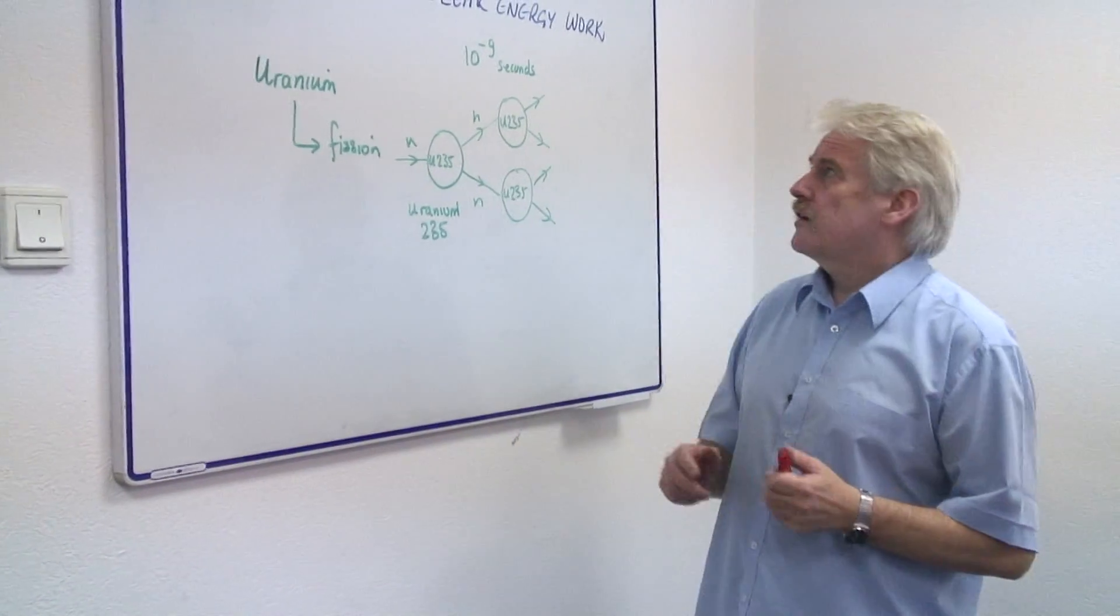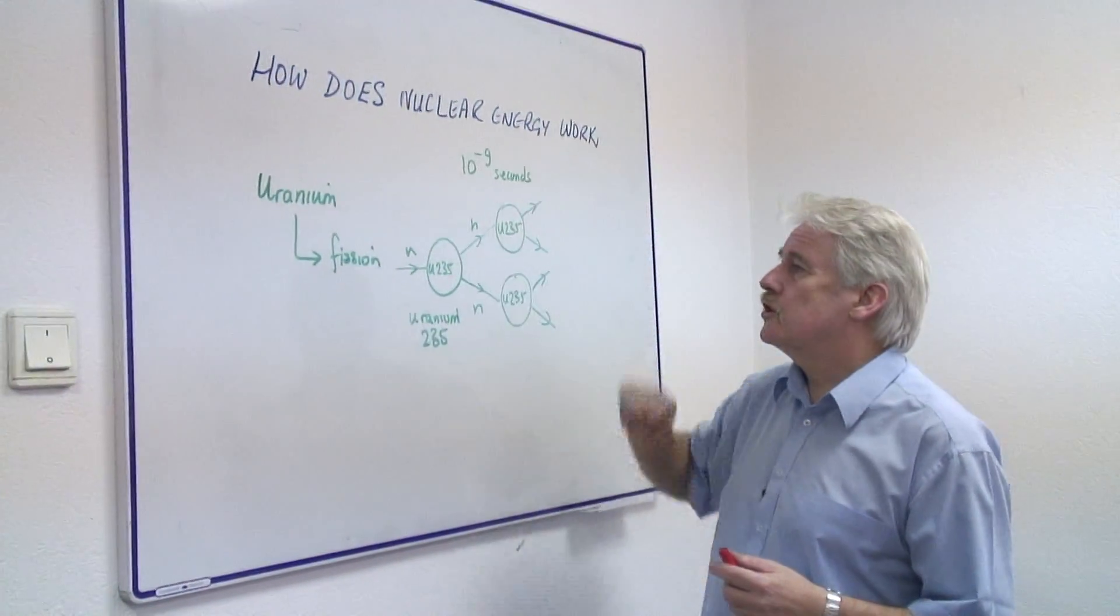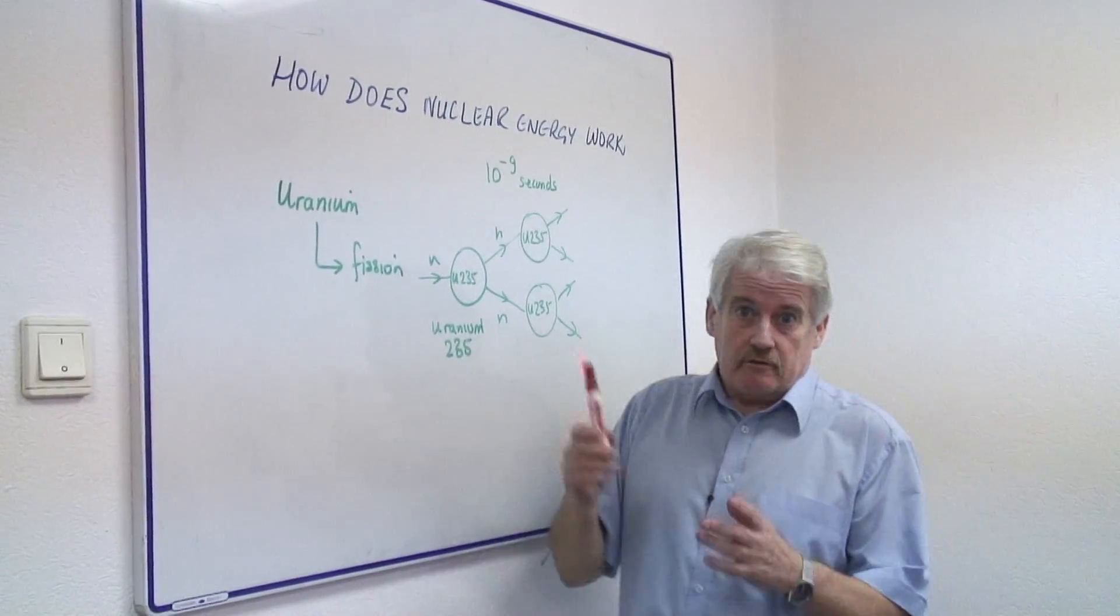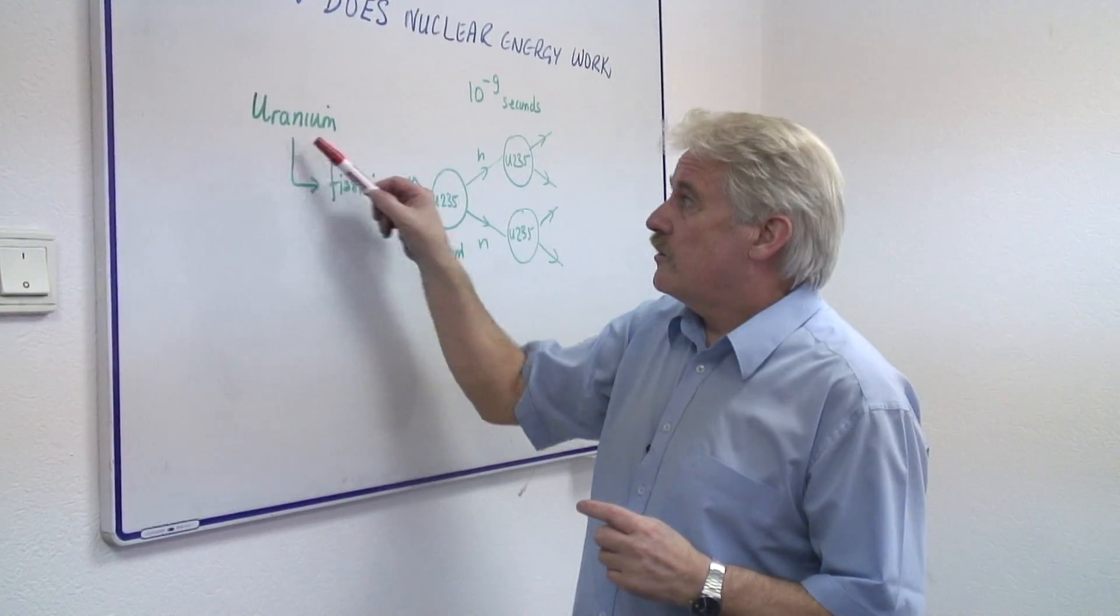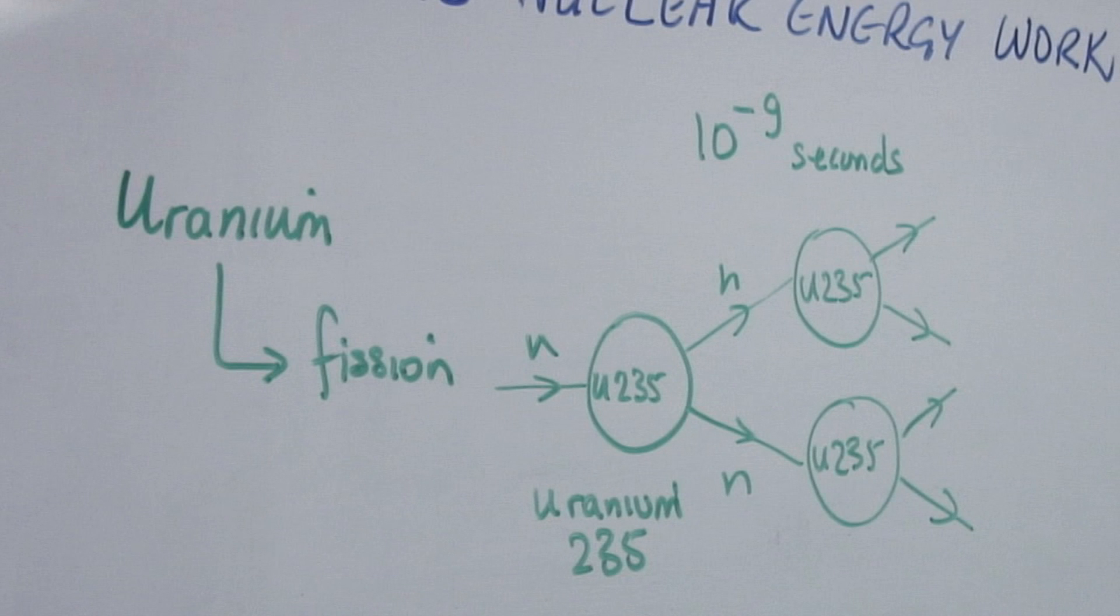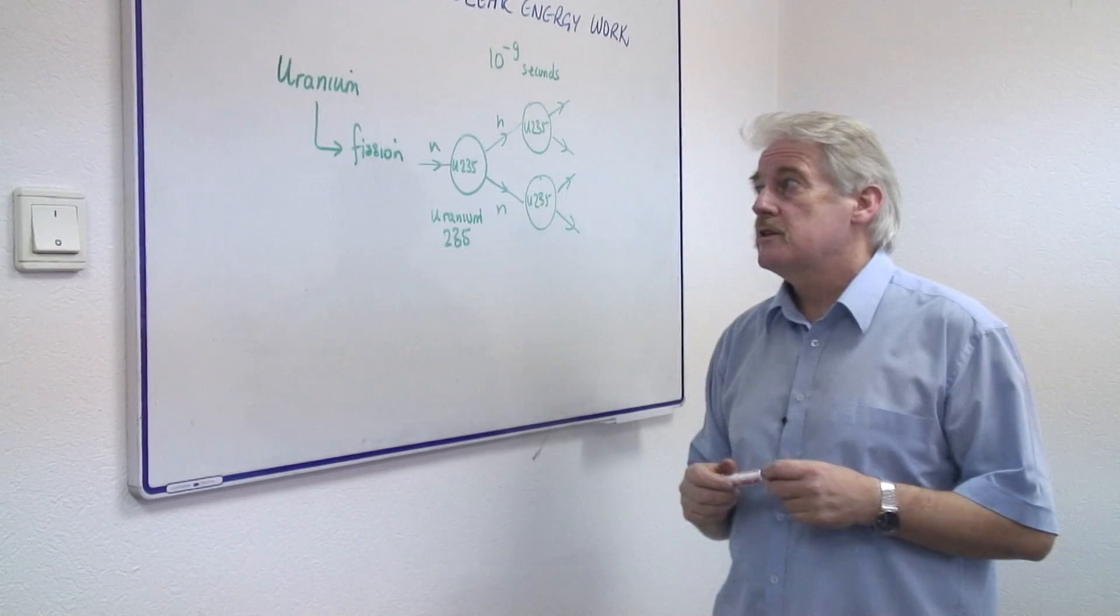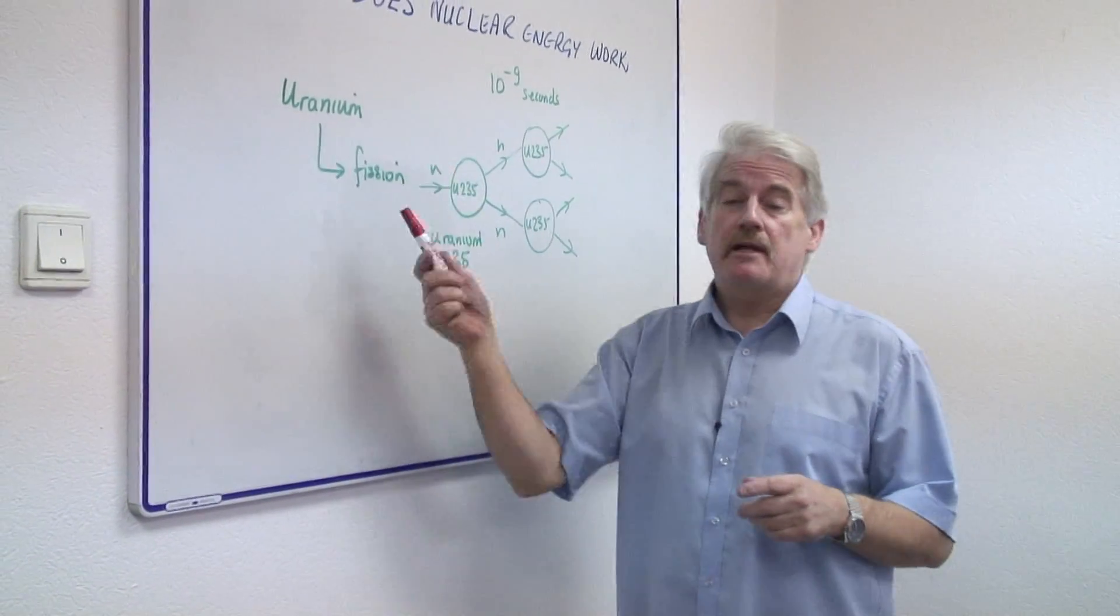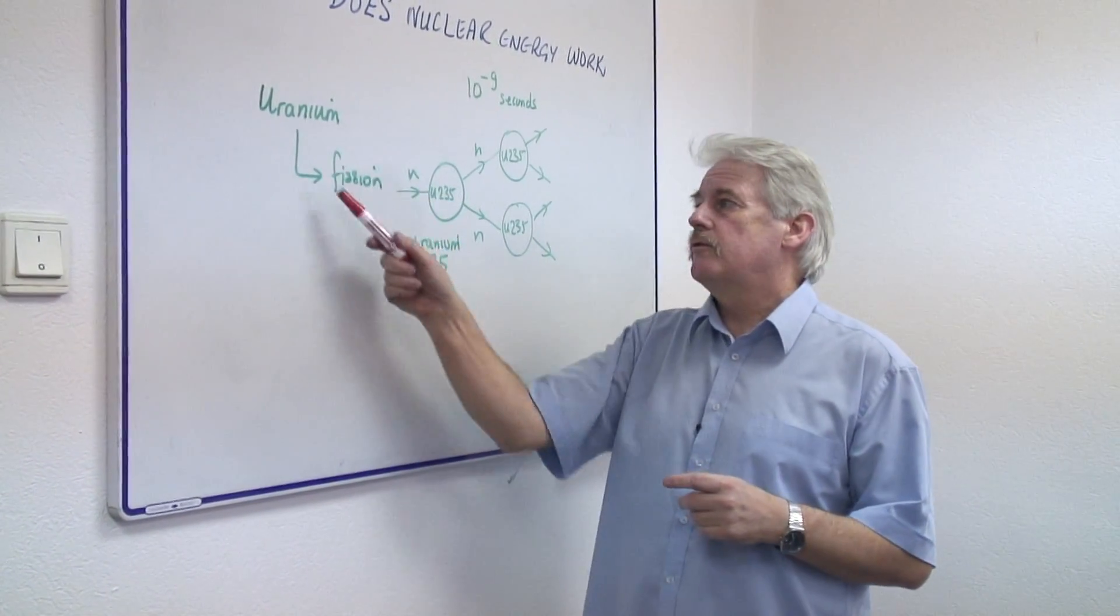Hi, I'm Steve Jones and I'm going to explain how nuclear energy works. Now, nuclear energy generally is produced from either uranium or plutonium. Plutonium is another radioactive material, but the process is basically the same. And the process is called fission.